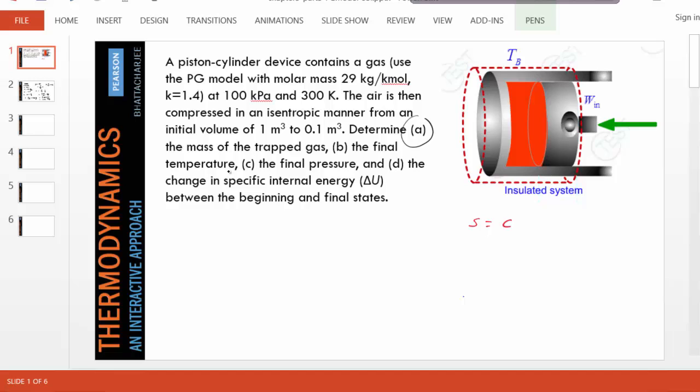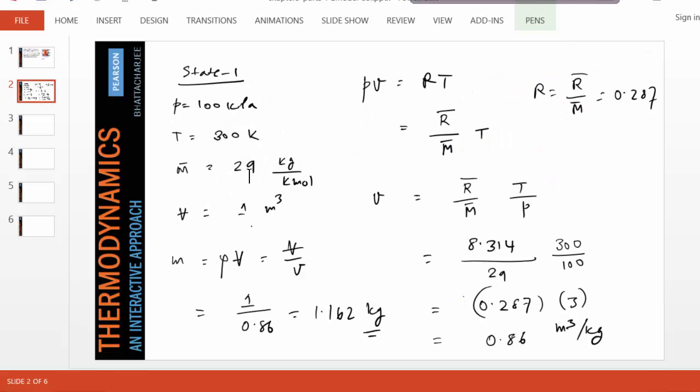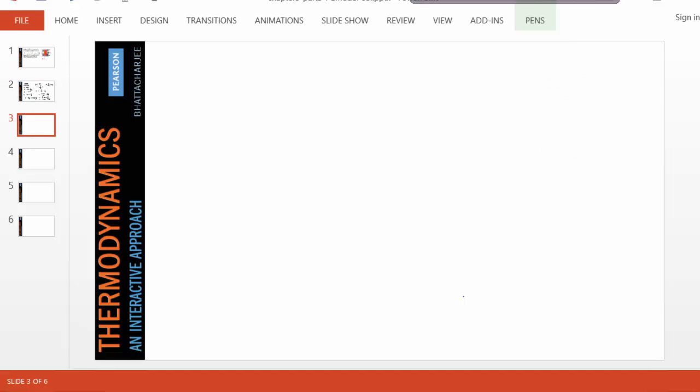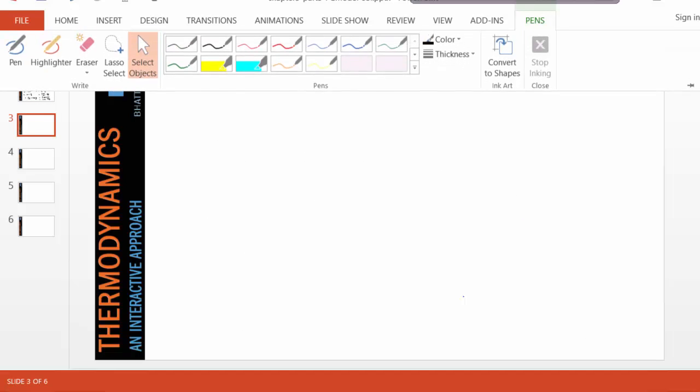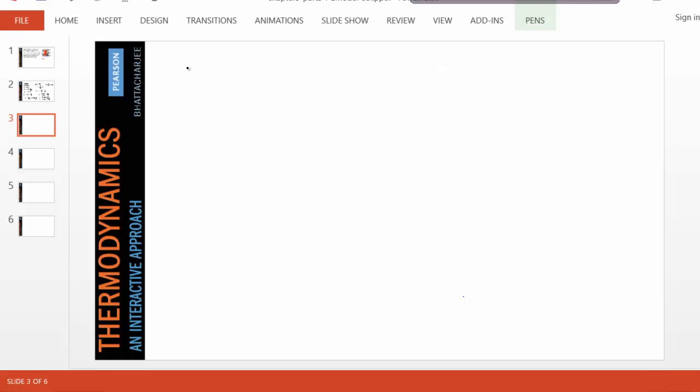The second part is the final temperature. Third part is the final pressure. So we notice that if the entropy remains constant, let's write down what is known about state 2. Of course, mass will never change. M2 would be equal to M1, 1.162 kg.